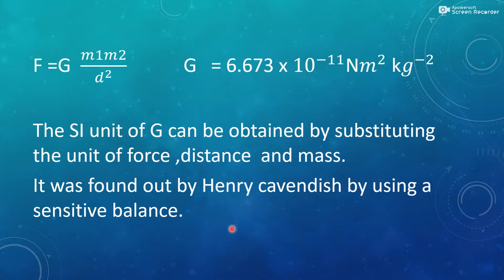From the previous equation, we will get F is equal to G M1 and M2 upon D square. And the value of G is 6.673 multiplied by 10 raised to the power minus 11 N m square kg raised to the power minus 2.